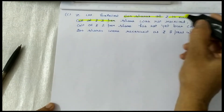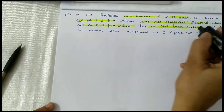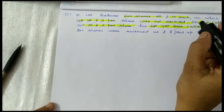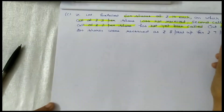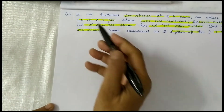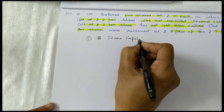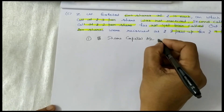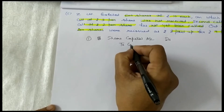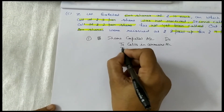Next question: Z Limited forfeited 600 shares of Rs.10 each, on which first call of Rs.3 per share was not received. Second and final call of Rs.2 per share has not been called, so called up capital is 10 minus 2, that is Rs.8. Out of these, 200 shares were reissued at Rs.8 paid up for Rs.7 per share. Entry: share capital debited, to calls in arrears, to share forfeiture account.